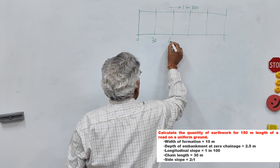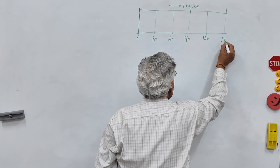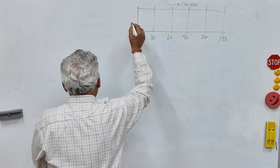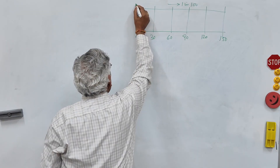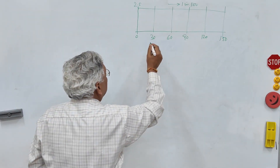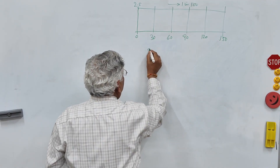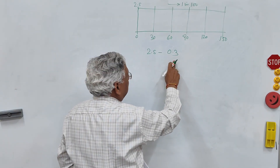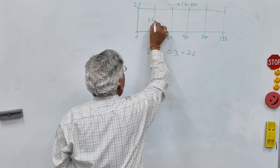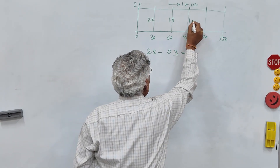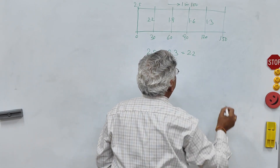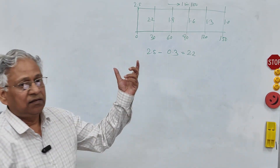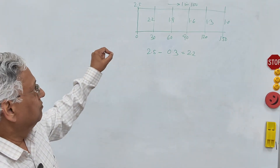At chainage 0 the height is 2.5 meter. Since the longitudinal slope is 1 in 100, for every 30 meters the height reduces by 0.3 meter. So the heights are: at 0 m → 2.5 m, at 30 m → 2.2 m, at 60 m → 1.9 m, at 90 m → 1.6 m, at 120 m → 1.3 m, and at 150 m → 1.0 m. The height varies from 2.5 meter at one end to 1.0 meter at the other.